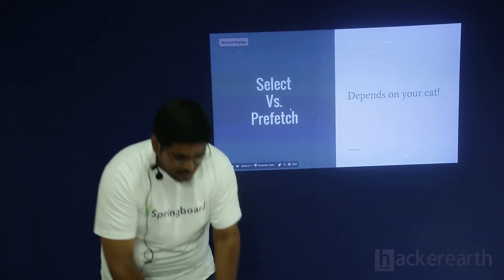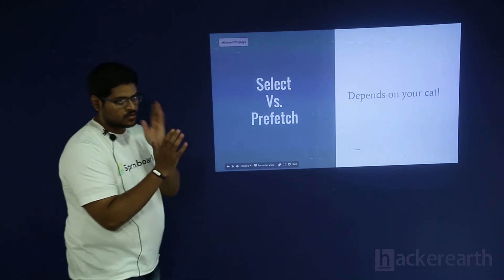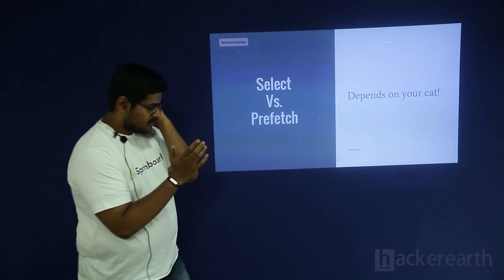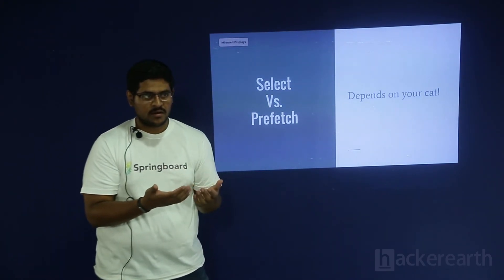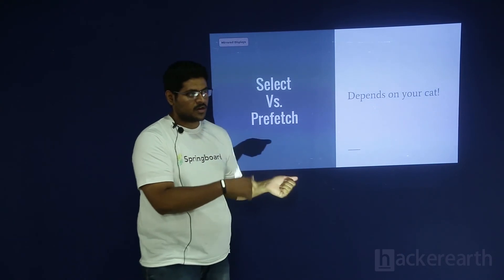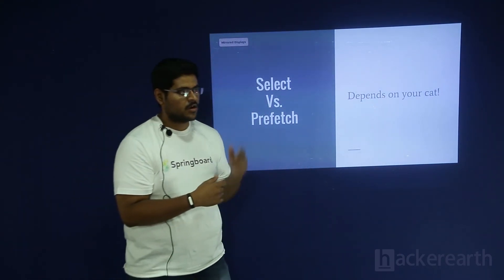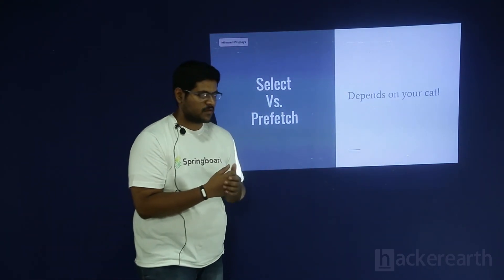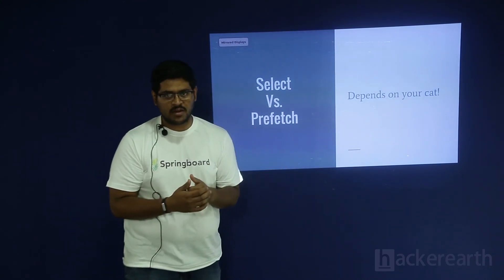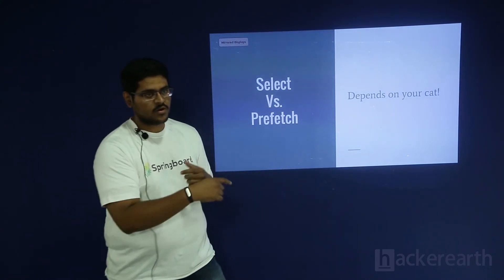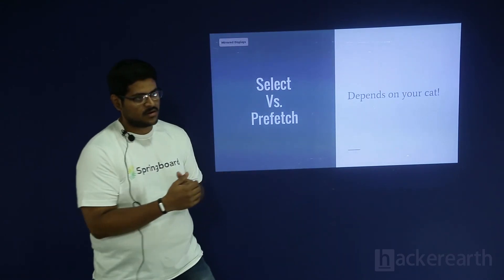So when do you use select_related versus prefetch_related? Most often, if you have a foreign key you are referencing the forward way or a one-to-one field, use select_related. If you have a many-to-many field or want to do a reverse lookup on a foreign key, use prefetch_related.